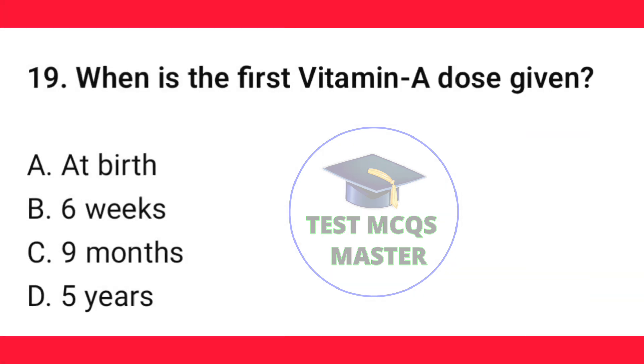Question number 19. When is the first vitamin A dose given? The correct option is C — nine months.